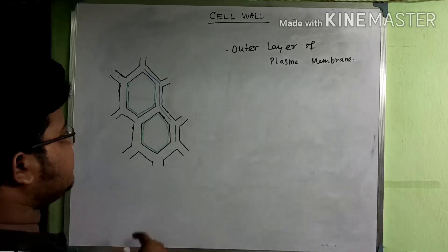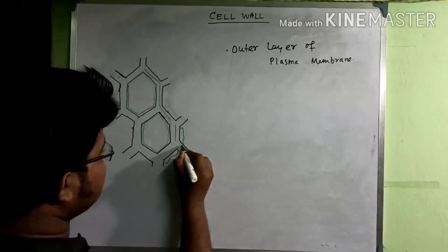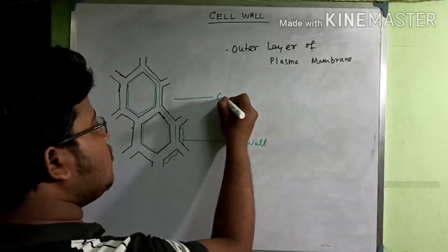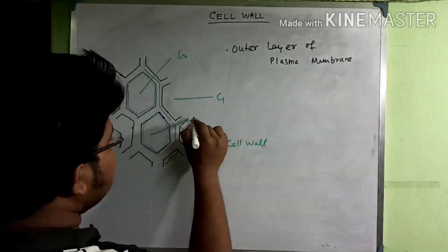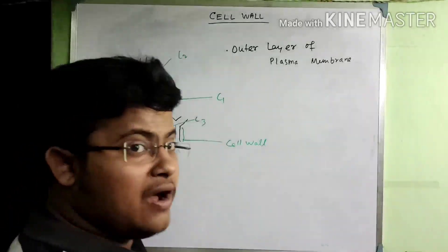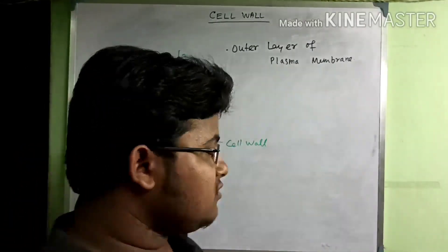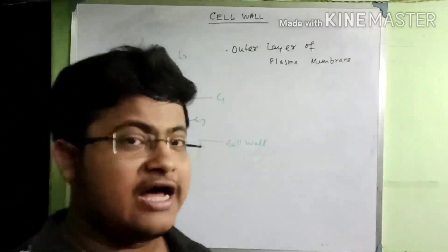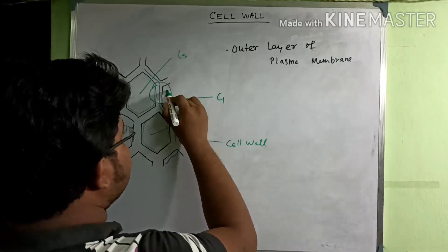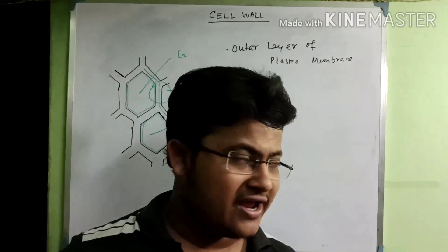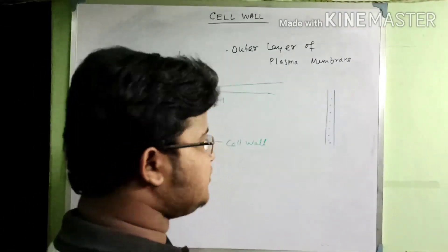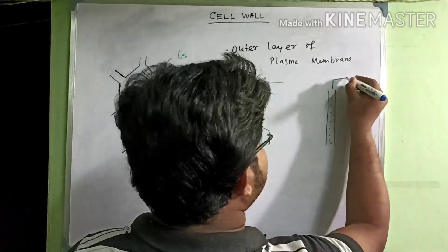I have drawn the plant cell wall here. This region is the cell wall. Here is cell 1, cell 2, and cell 3. I have also drawn a line with the blue marker — this highlighted region has great importance. If I zoom into this position, let's see what it looks like.